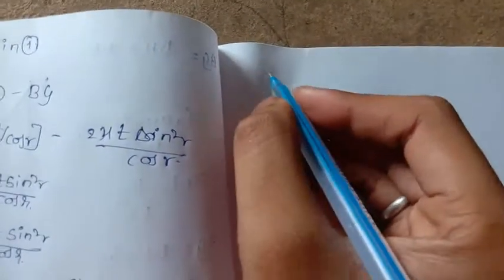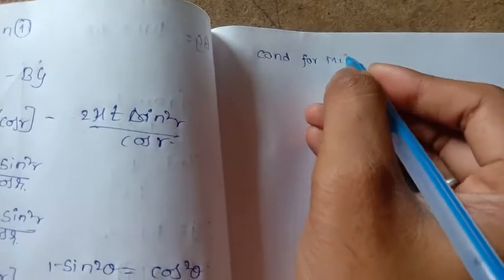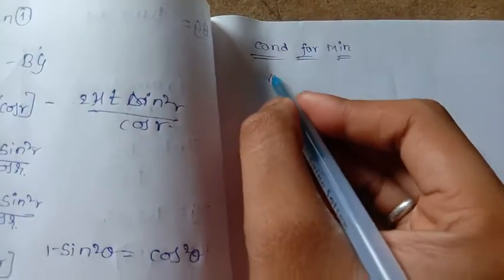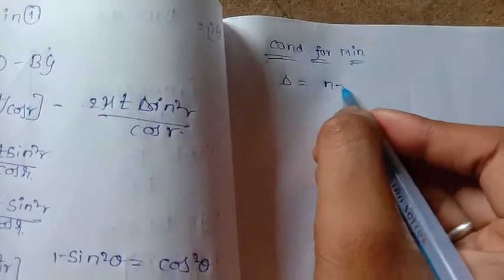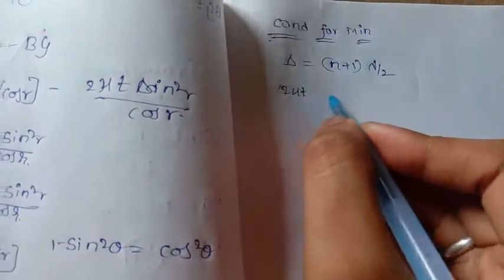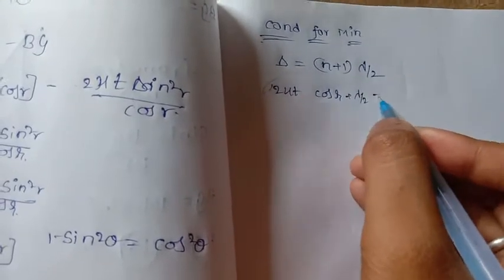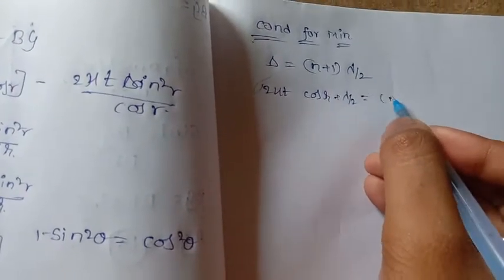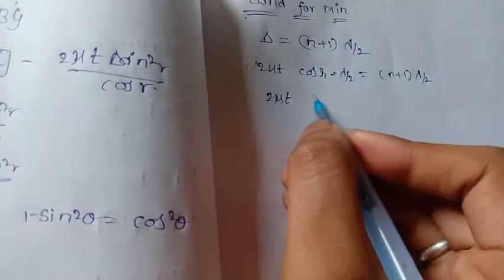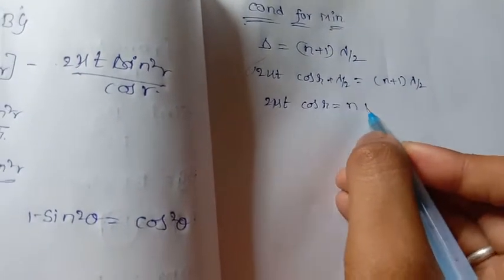The next condition for minimum: delta equal to (n plus 1) lambda by 2. 2μt cos r plus lambda by 2 equal to (n plus 1) lambda by 2. 2μt cos r equal to n lambda.